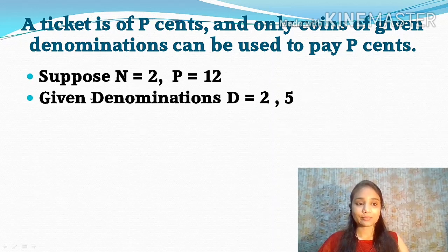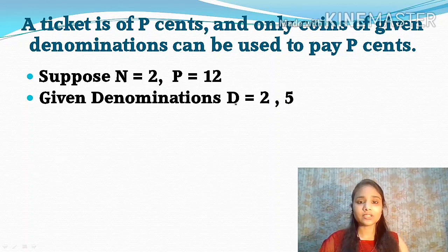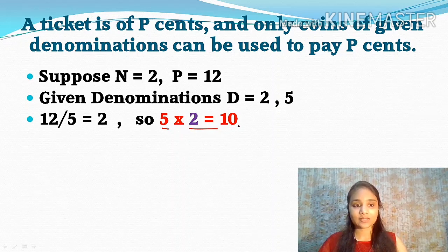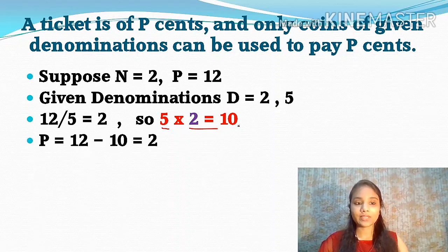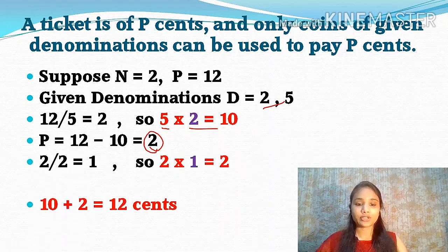Let us take an example to understand how this works. Suppose you need to pay 12 cents to the driver for the ticket, and the denomination of coins that you have is 2 and 5. What is the first thing that comes to your mind? If you need to pay 12 cents, you will select 2 five-cent coins, which is equivalent to 10 cents. So the leftover cents that you need to pay will be 2 cents. Now you have a 2 denomination coin as well, so you will select 1 two-cent coin — a total of 12 cents paid to the bus driver.